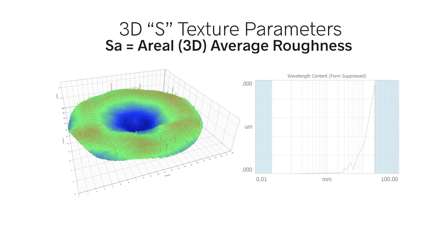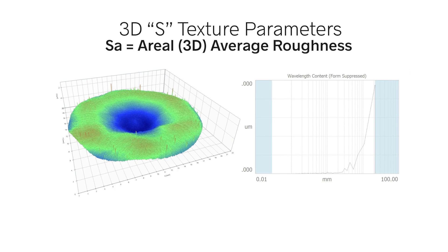Now, let's talk about aerial or 3D texture. SA is the aerial average roughness. SA is calculated similarly to RA. We remove the overall shape, calculate a mean plane,